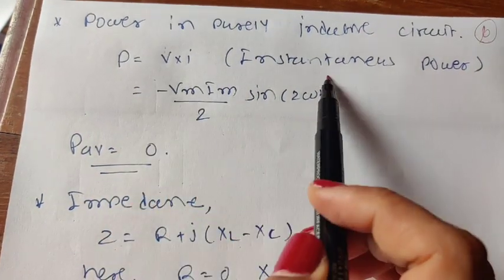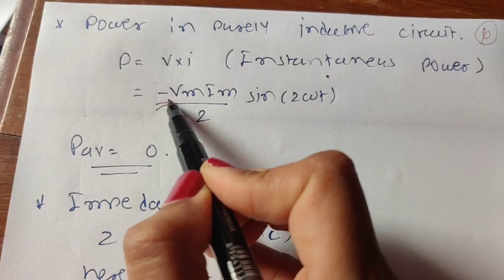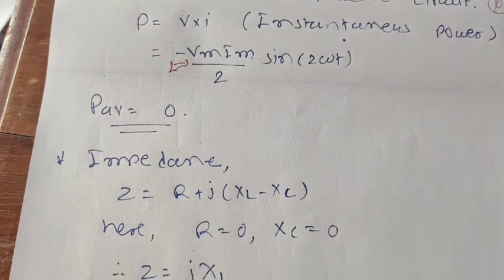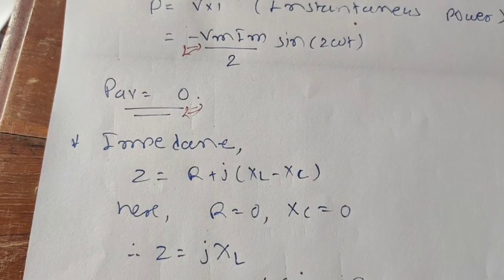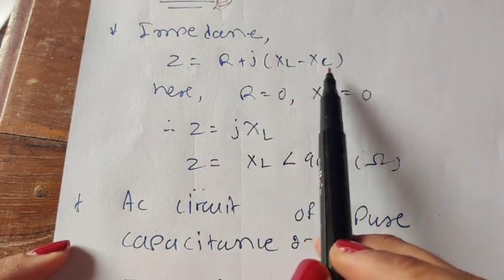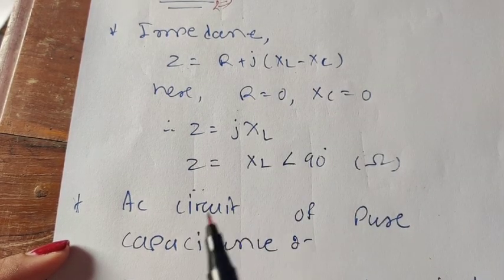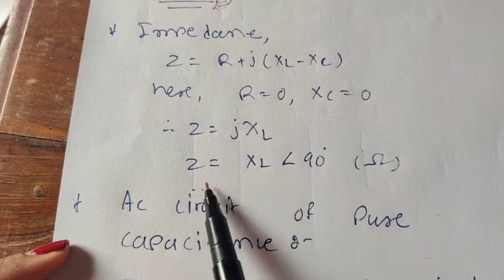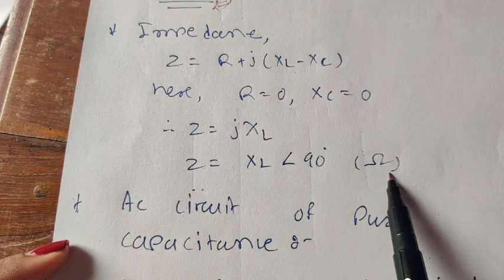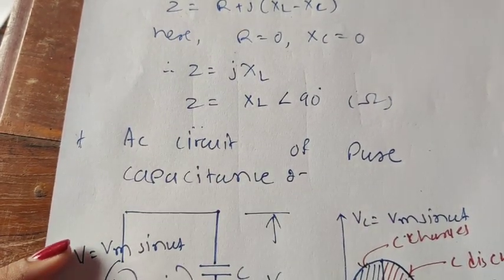The instantaneous power in a purely inductive circuit is P = VI = −(Vm·Im/2)·sin(2ωt). The negative sign indicates the self-induced direction of current in the inductor. The average power for a purely inductive circuit is zero. The impedance is Z = R + j(X_L − X_C); since R = 0 and X_C = 0, Z = jX_L, which equals X_L with a phase angle of 90°, measured in ohms.